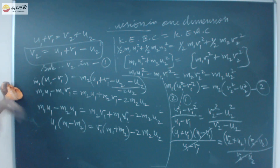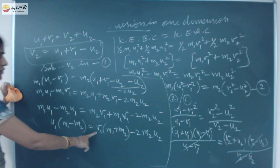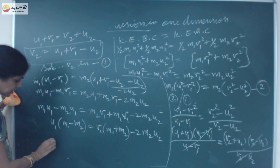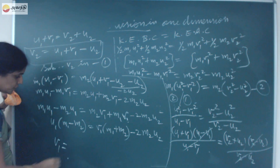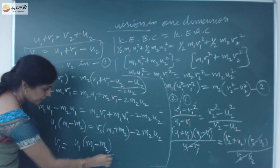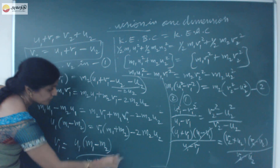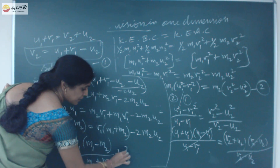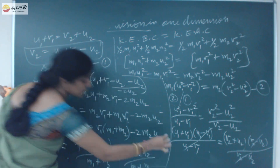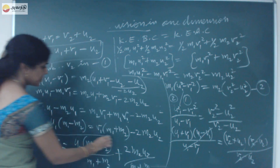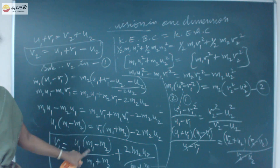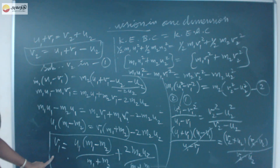Solving for V1: V1 equals U1 times (M1 minus M2) divided by (M1 plus M2), plus 2 M2 U2 divided by (M1 plus M2). So V1 equals [U1(M1 minus M2) plus 2 M2 U2] divided by (M1 plus M2).